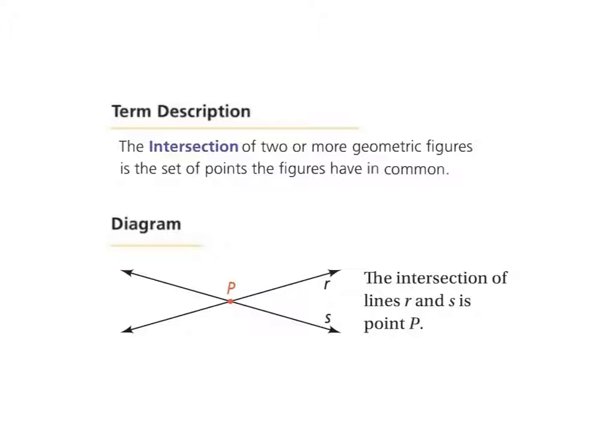The next term is intersection. The intersection of two or more geometric figures is the set of points the figures have in common. So, taking a look at this diagram, we have two lines. We have line R, which is right here. There's line R. Notice it's labeled with just a little lowercase r. And we have line S. And again, label just a little lowercase s. Again, please remember, R and S are not points. They're lowercase. They are describing the lines. But, these two lines intersect. They cross each other. Where do they cross each other? Right there at point P. So point P is then the intersection of these two lines. And we will learn that intersections don't have to be just a point.